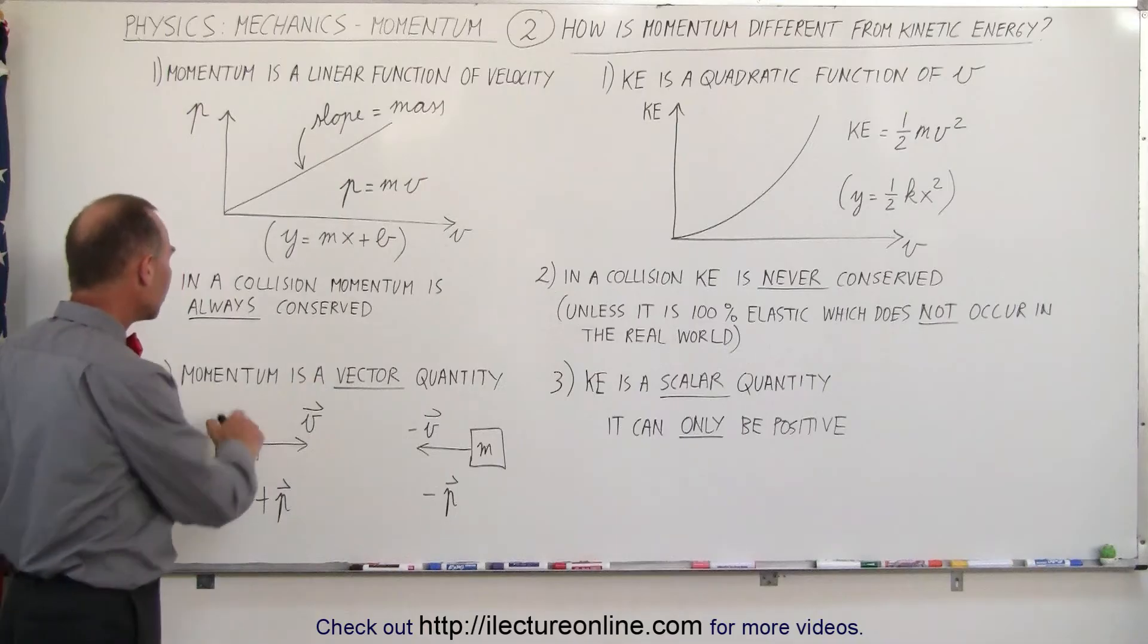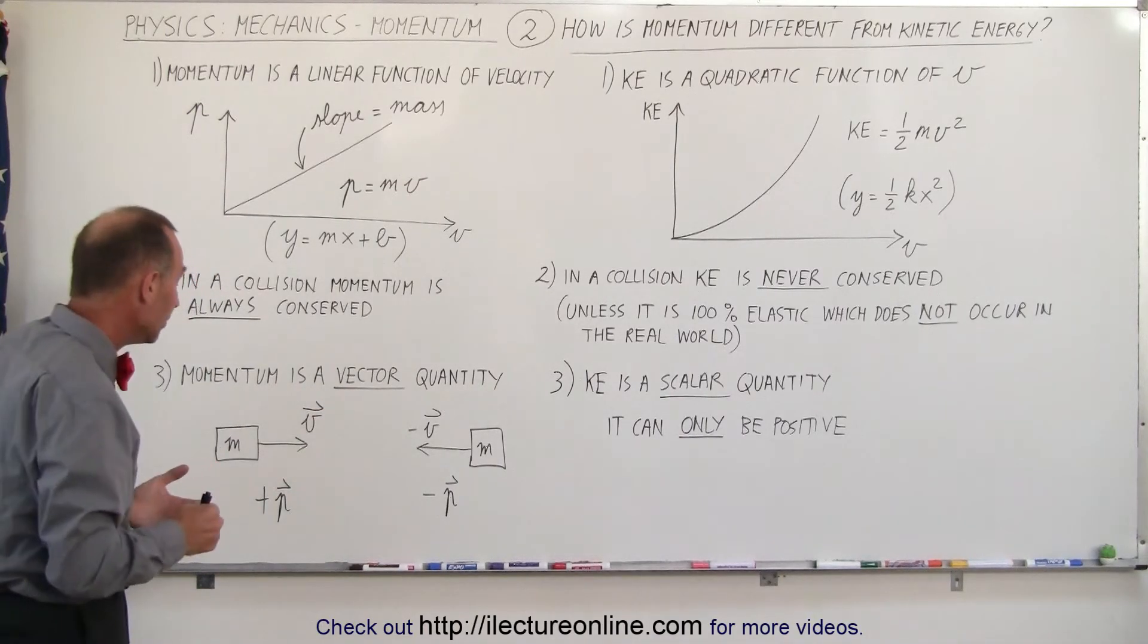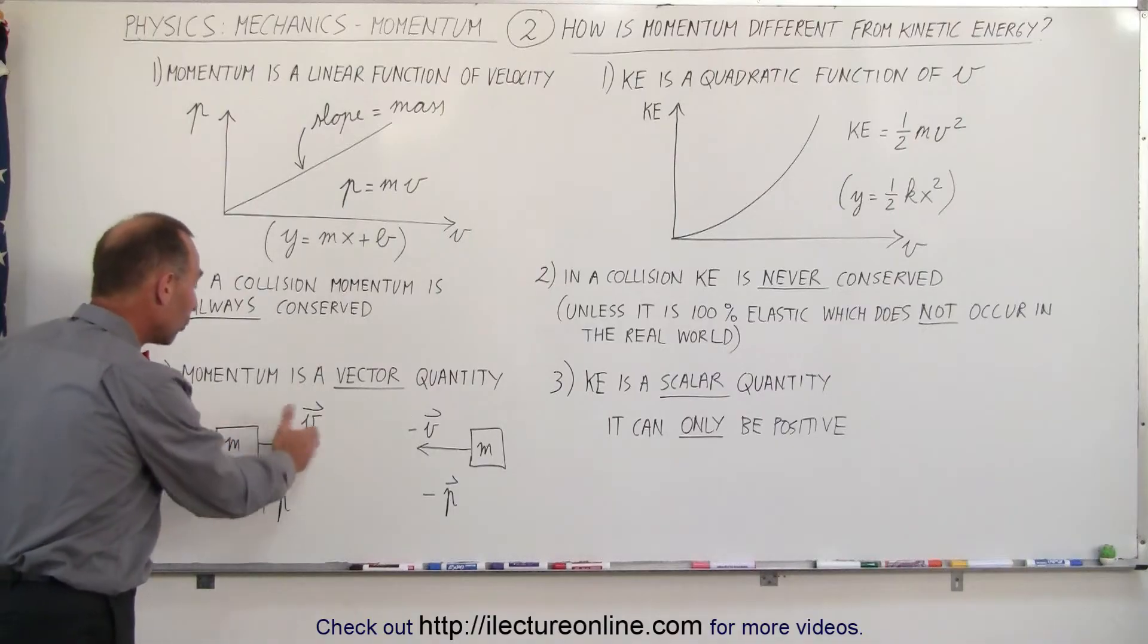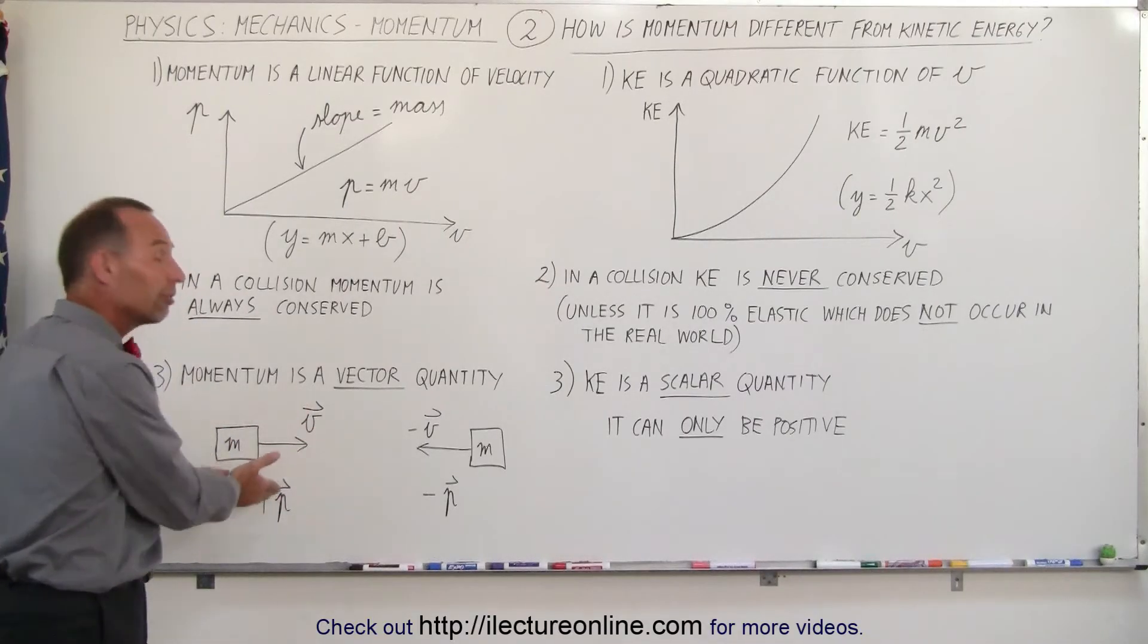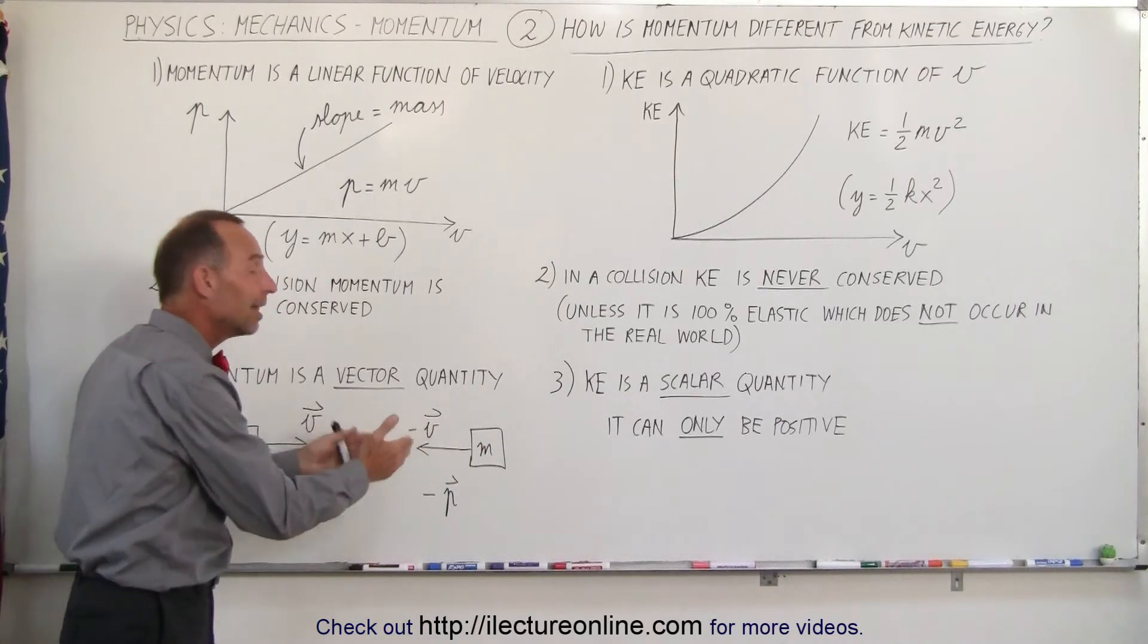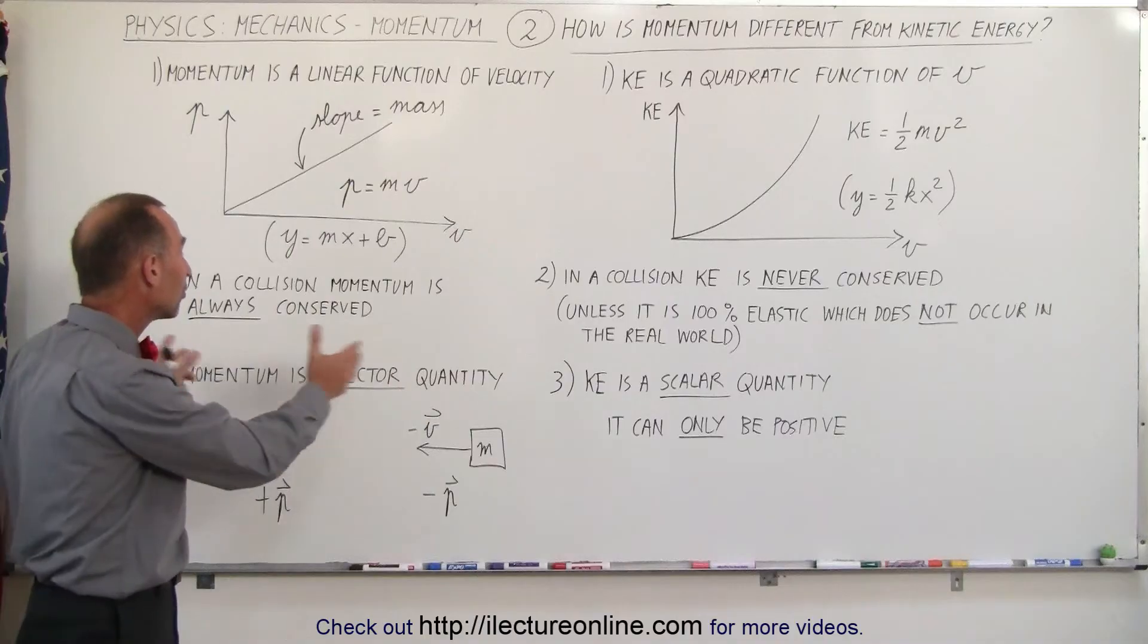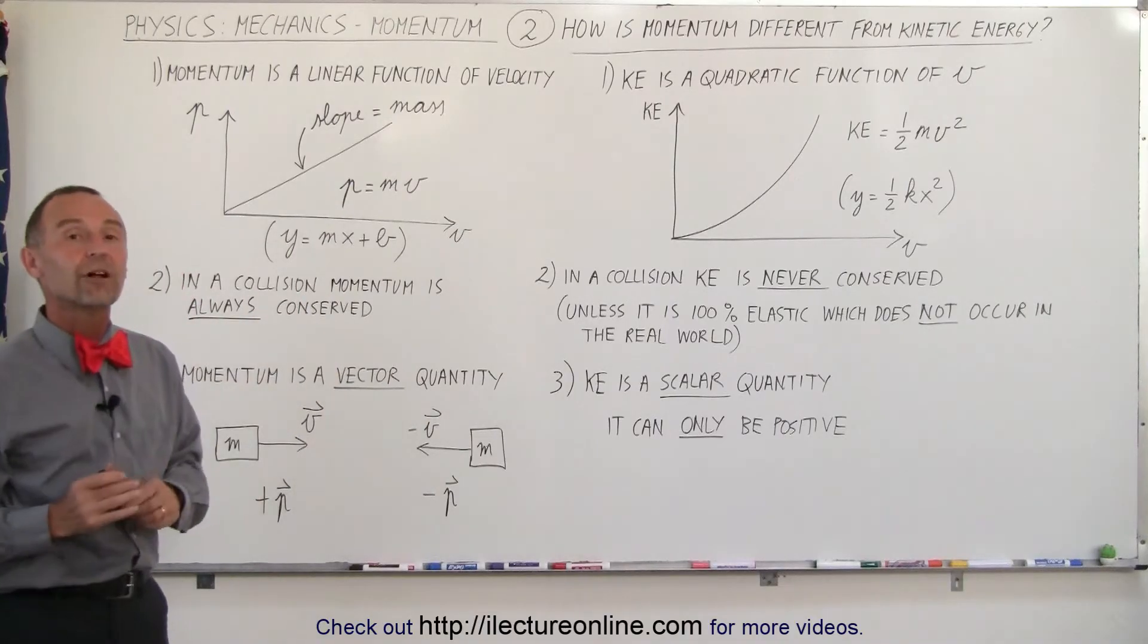And finally, notice that momentum is a vector quantity, just like we showed in the first video. So when an object is moving to the right, we can say that it has positive momentum. When an object is moving to the left, we can say that it has negative momentum. And we do have to keep those directions in mind when we start working out problems involving momentum.